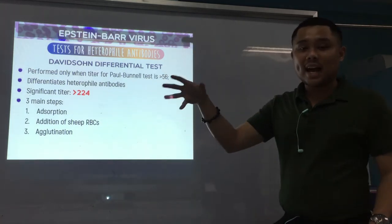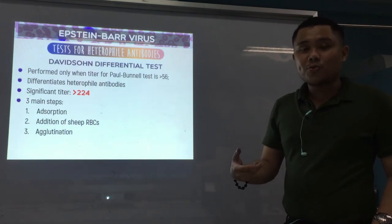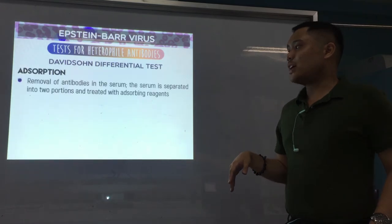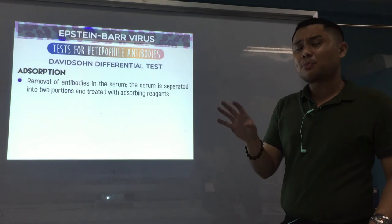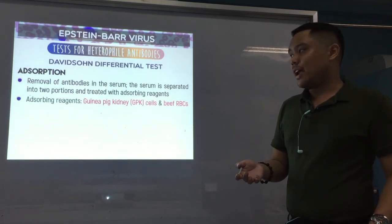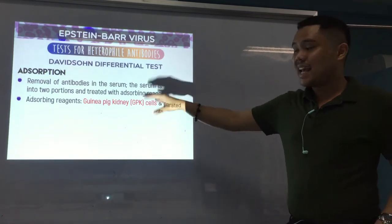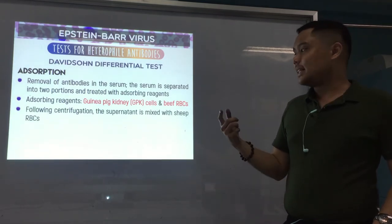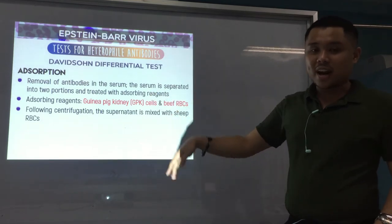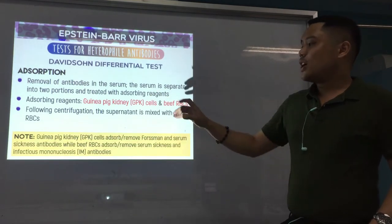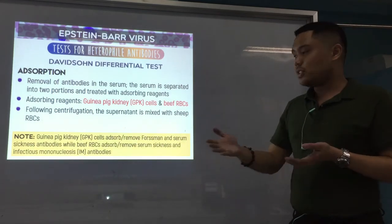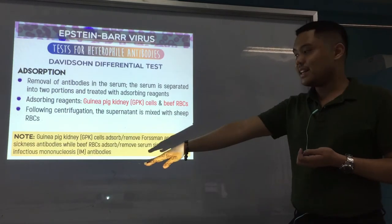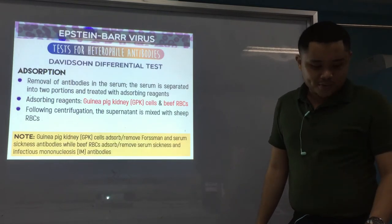Similar to Monospot, adsorption is a main step. The main purpose of adsorption is to remove cross-reacting heterophil antibodies. For the adsorption step, the serum is separated into two portions and treated with adsorbing reagents — guinea pig kidney cells (GPK) and beef RBCs. Following centrifugation, the supernatant is mixed with sheep RBCs as the indicator and tested for agglutination.